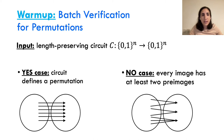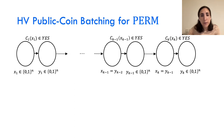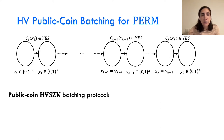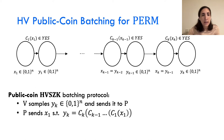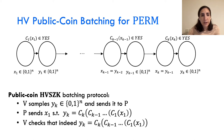Let's start with a warm-up. The input is length-preserving circuits. The yes cases are circuits that define a permutation, and the no cases are circuits that are far from being a permutation, in the sense that every image has at least two pre-images. We think about k instances of this problem as a composition. First, the verifier samples some y_k and sends it to the prover. The prover calculates some x_1 such that the composition of the circuits on x_1 equals y_k and sends x_1 to the verifier. The verifier checks that y_k is indeed the output of the composition of the circuits on x_1 and accepts or rejects accordingly.